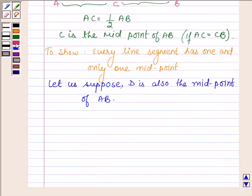And to show that every line segment has one and only one midpoint, we will show that D coincides with C.